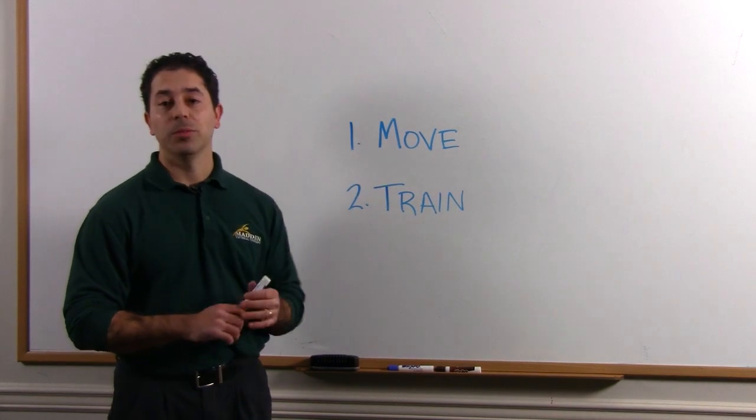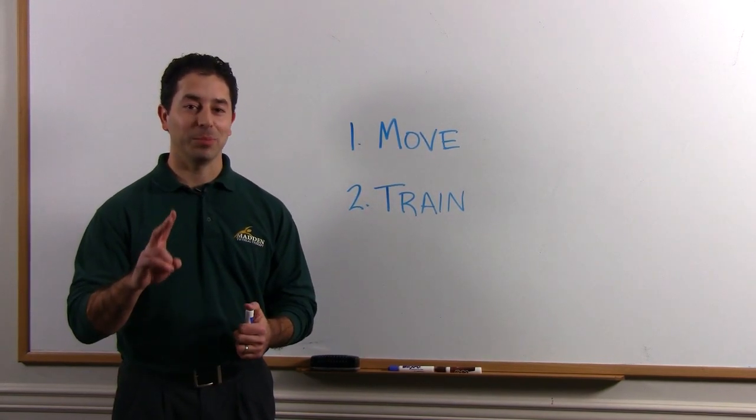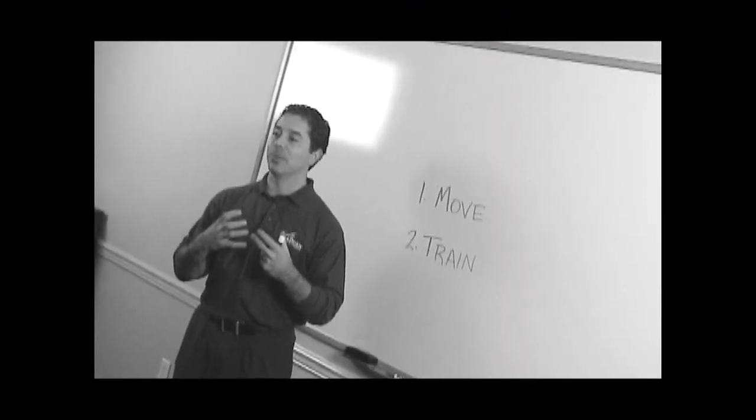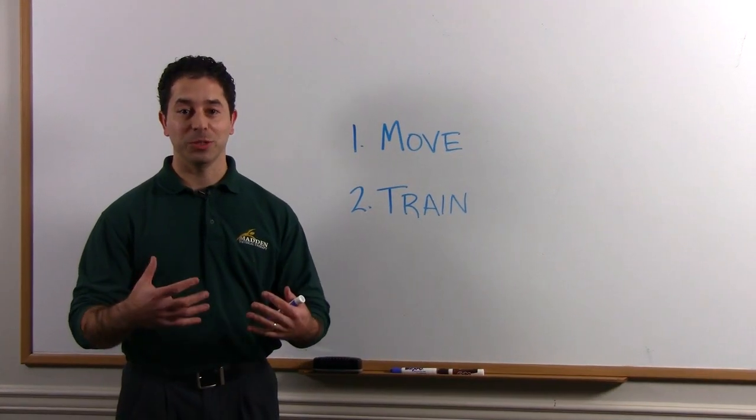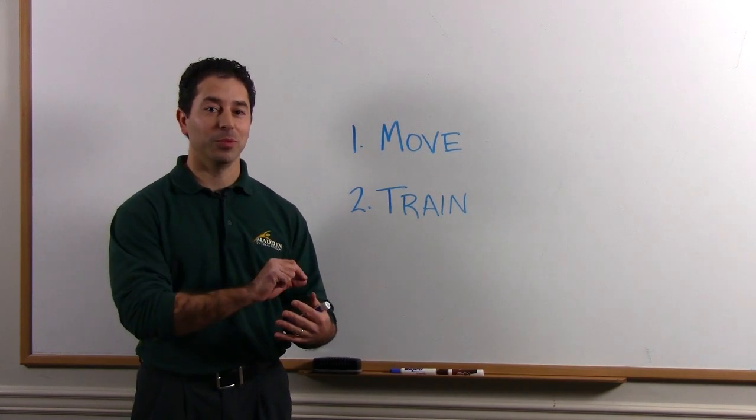So the first goal is to get the person to move, help them to move the way that they're supposed to. The second part of that is to retrain the muscle. The muscle has memory, and if you've been moving the wrong way for a period of time, you need to do some exercise to retrain the muscle so that it doesn't go back to the way that it was before.